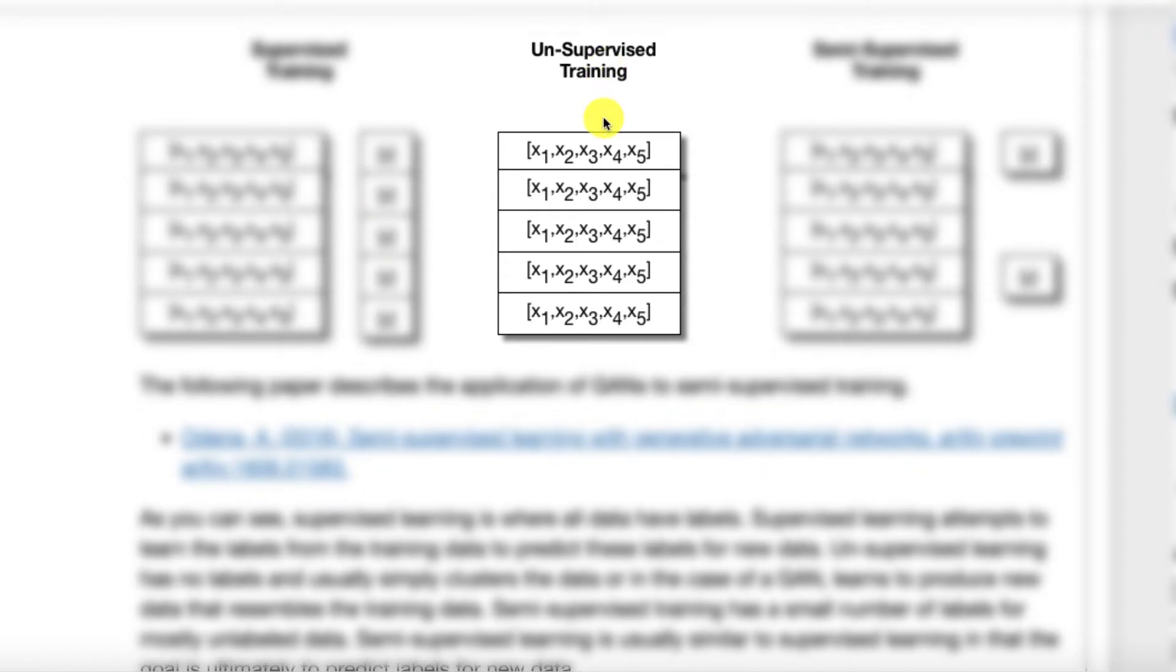Unsupervised training is where we have the X's. It could look just like this. It would work with image data, tabular, or really just about anything, but there is no Y. We're letting the neural network or whatever model it is, and you don't typically, by the way, use neural networks for unsupervised training. This is usually the area of things like k-means, clustering, and other things.